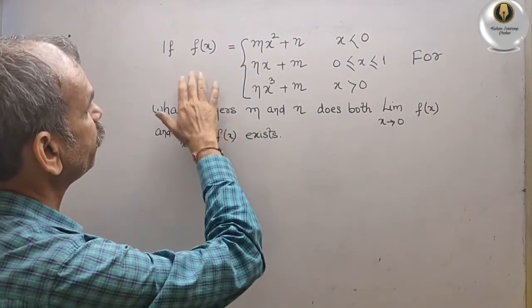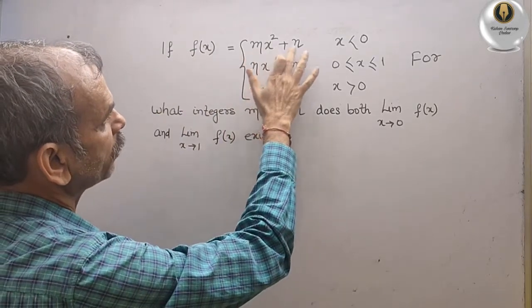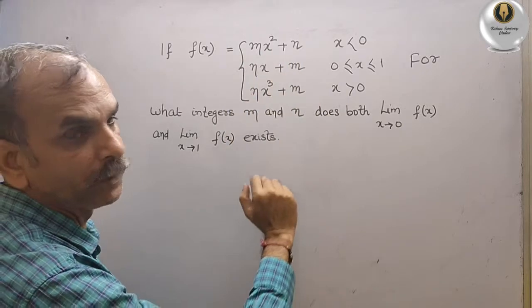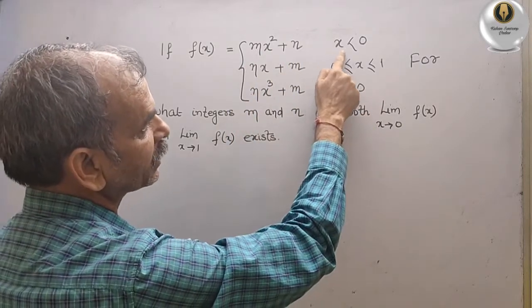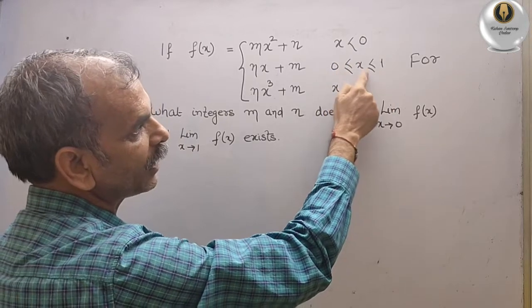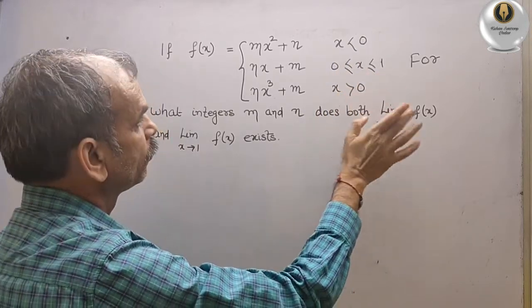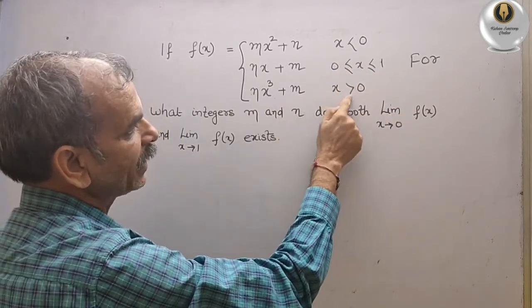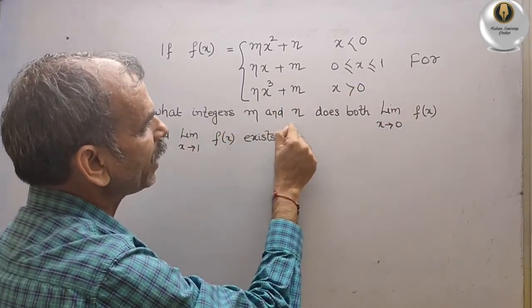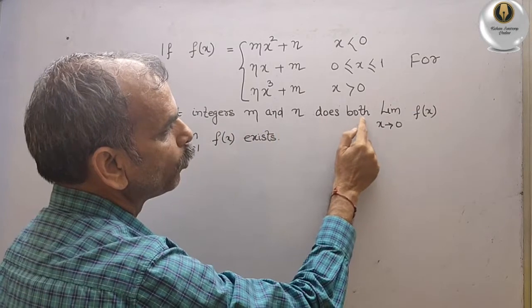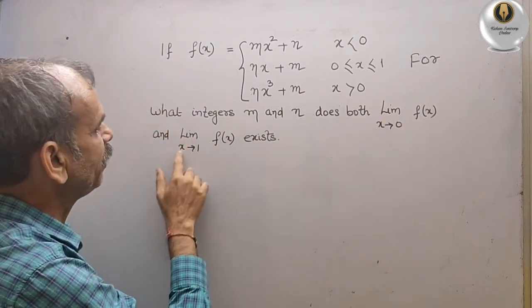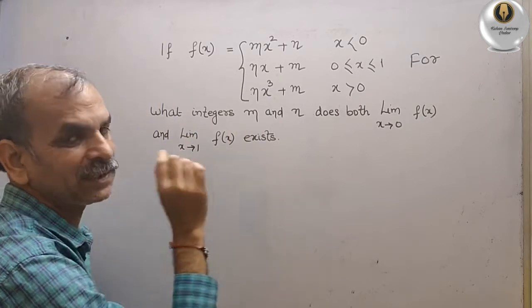Your question is: if f(x) is equal to mx² + m for x less than 0, nx + m for x greater than or equal to 0 and less than or equal to 1, and nx³ + m for x greater than 0. For what integers m and n does both the limit as x tends to 0 and the limit as x tends to 1 of f(x) exist?